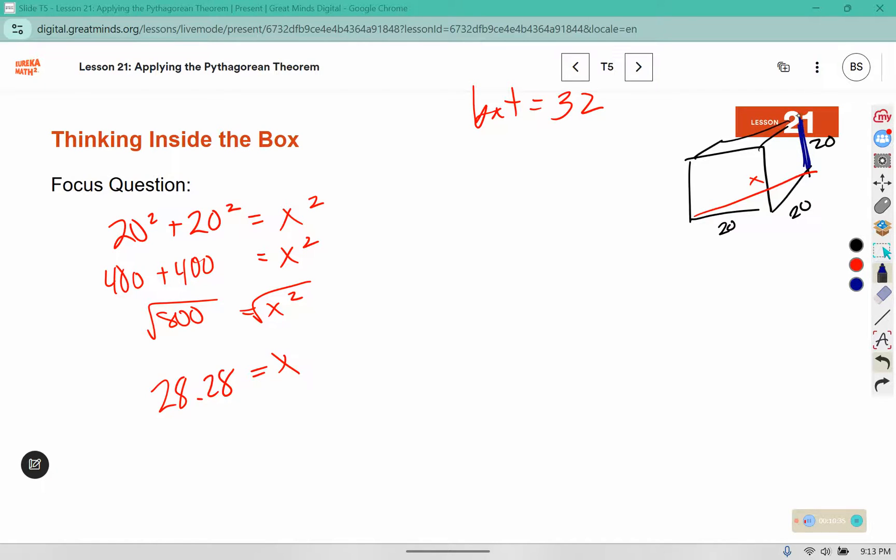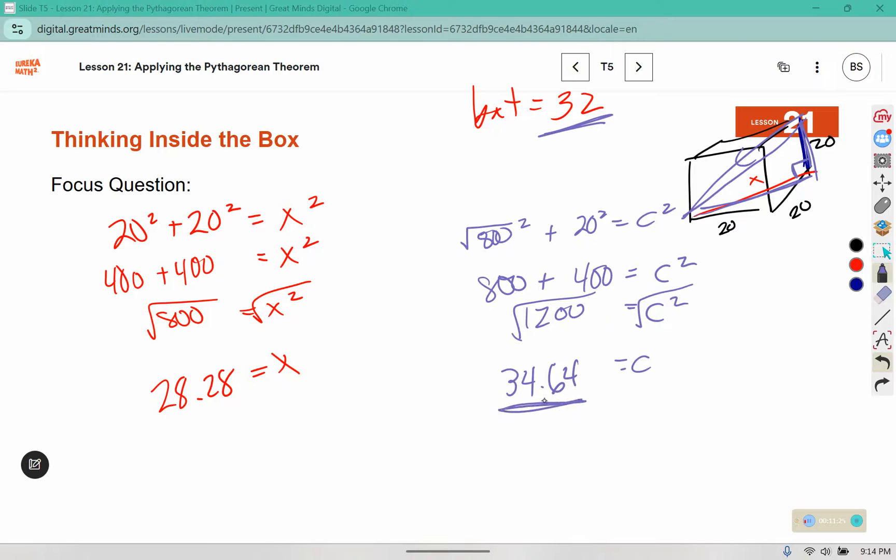But if we create a right triangle going diagonally in the bottom to the top right corner, we have this x value is now a leg with the 20. So we have the square root of 800 squared plus 20 squared equals c squared. We talked about how a square root and a square undo each other. 20 squared is 400. If I add those together, I get 1,200. So to solve for c, I'm taking the square root of both sides, and c is approximately 34.64. Since the bat is only 32 inches, it will fit diagonally from the bottom corner to the opposite top corner in the box.